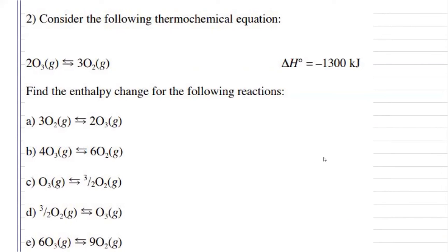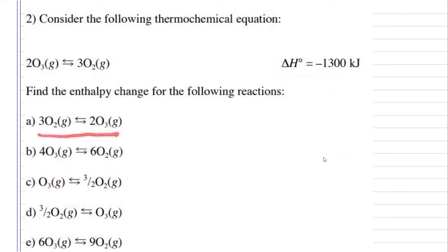For number 2, we're given the reaction of 2 moles of ozone into 3 moles of oxygen gas, and we know that it's going to release 1300 kilojoules. So, if we were to go in the opposite direction, well instead of releasing 1300 kilojoules, it's going to need 1300 kilojoules. If we multiplied our original reaction by 2, well it's going to release twice as much energy, so it'll release 2600 kilojoules.